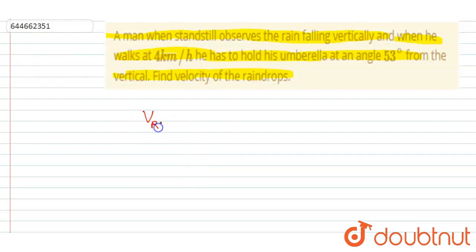So if I write down the velocity of the rain with respect to man, it will be velocity of the rain minus velocity of the man. We know this. From here I can write down the velocity of the rain is velocity of the rain with respect to man plus velocity of the man.